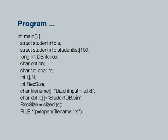Going back to the program, char option, char *n, char *r, int i, j, n, etc. — different variables I will use. Integer rec_size will equal the size of my structure. As you can see later, 'rec_size = sizeof(s)' captures the record size.